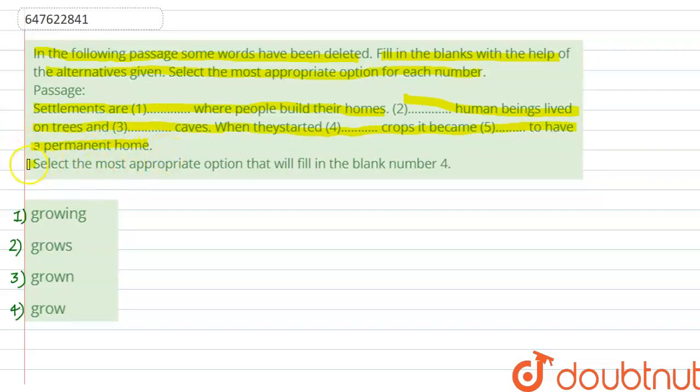Now, we have to select the most appropriate option that will fill blank number 4. We are talking about how people live, where they were, and how they were.